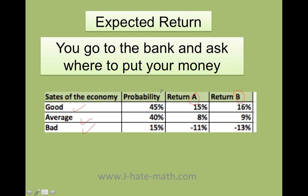The probability that this can happen is going to be 45% for good, 40% for average, and there is a 15% probability that there's going to be a bad economy — which is actually pretty good. So you have different scenarios.